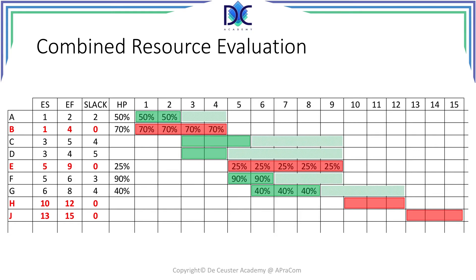What we have to do now is calculate the total commitment per time period. For period one, we take all the commitments in column one and add them. We do the same for column two, and we find that the commitment for Harry Potter in periods one and two is 120%. This is clearly more than 100%, and we have to resolve a problem in periods one and two.